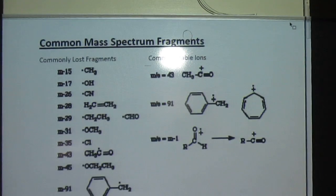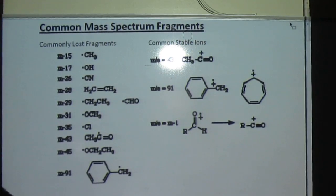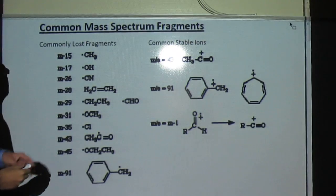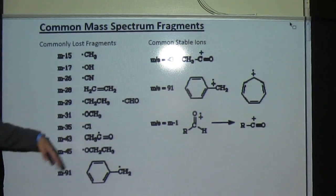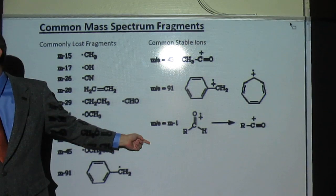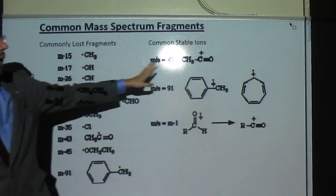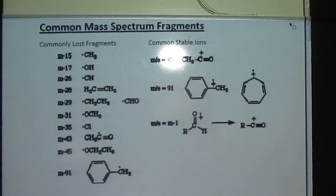So let's go back to that common fragment. And when we look at these two different sides of the table, this is commonly lost fragments, and this is common stable ions, right? So which side of the table, left or right, is the mass spec actually detecting? The right. The right, because they're the ions, right? The positively charged. That's what the detector detects.